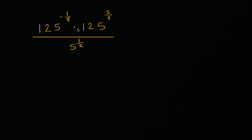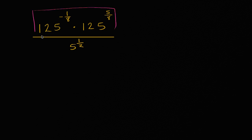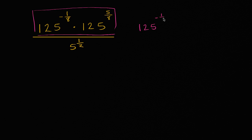The first thing that jumps out at me is the numerator here. I have 125 raised to the 1/8th power times the same base, 125 raised to the 5/8th power. So I can rewrite this numerator using exponent properties as 125 to the sum of these two exponents — to the negative 1/8th power plus 5/8th power. All of that is going to be over the existing denominator, which is 5 to the 1/2.